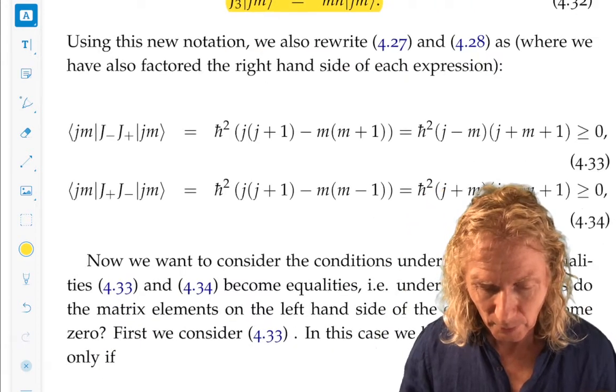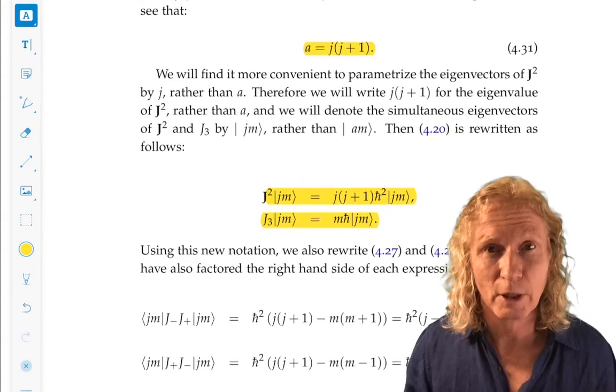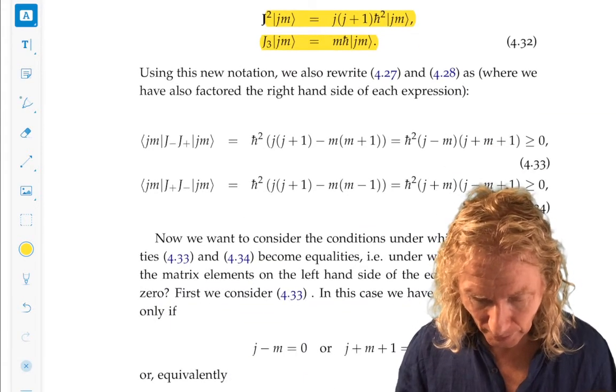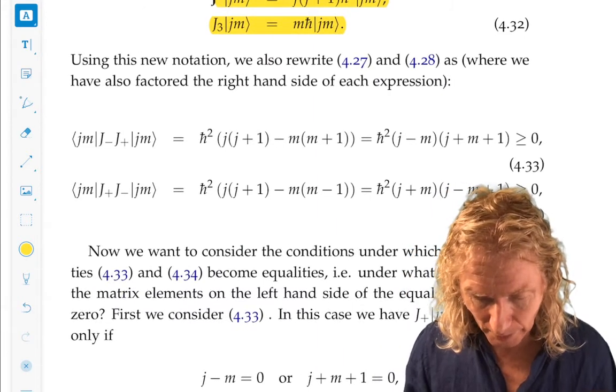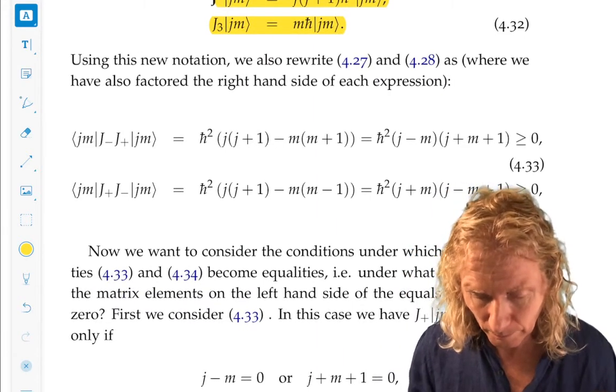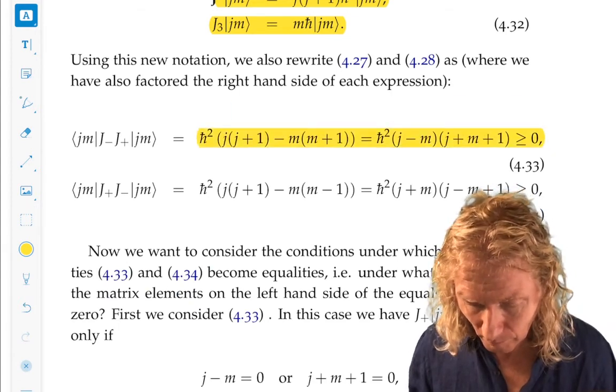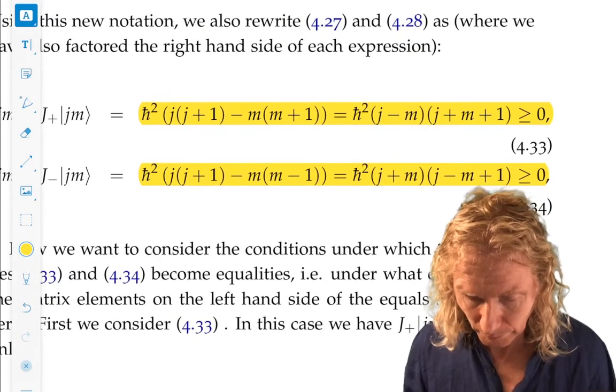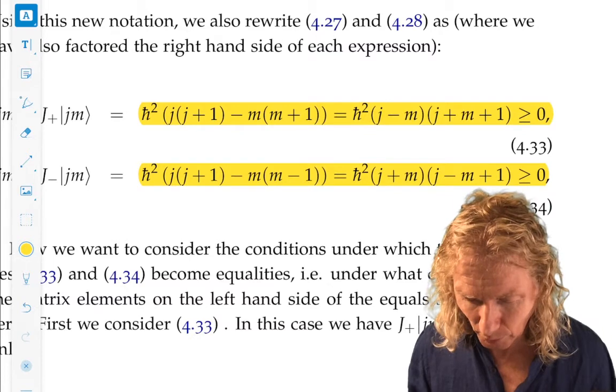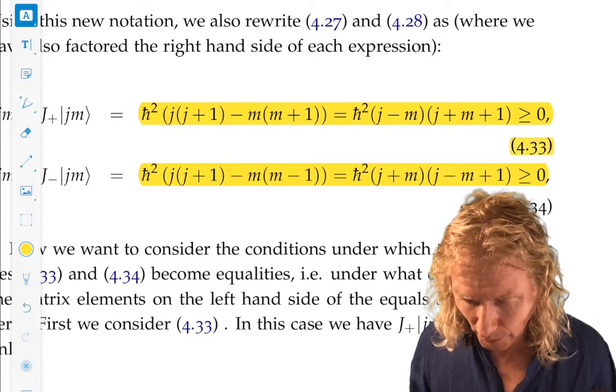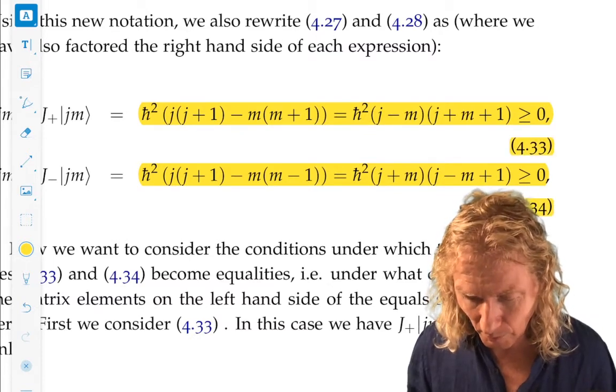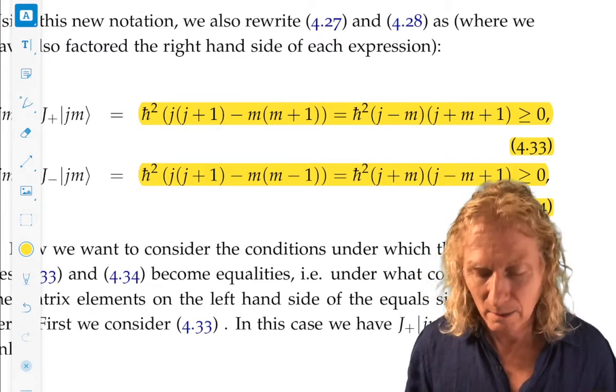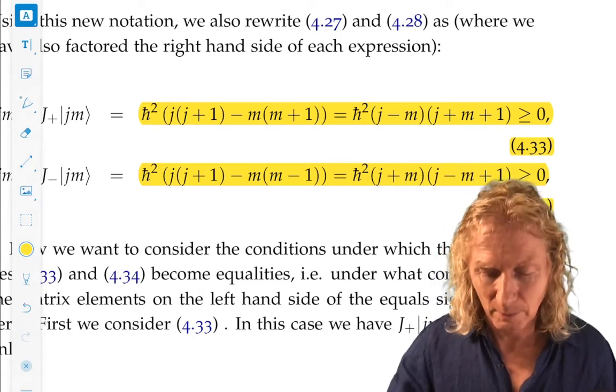And if we substitute a equals j plus 1 for 31 into that expression on the right-hand side of the corollary for a, we get these expressions. And these are rather nice expressions. They have a 433 and 434. They have rather a symmetry between where the minuses and pluses go on each one. And we're going to exploit that in some detail.